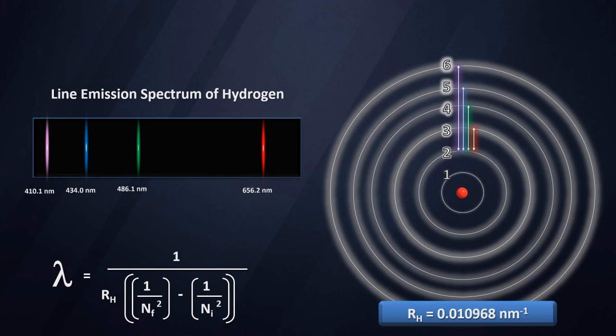And so what Bohr was arguing here was that these line emission spectra are evidence for various orbitals or energy levels at which an electron could reside, and it couldn't reside anywhere else. It's fairly elegant proof of a very highly structured electron cloud.